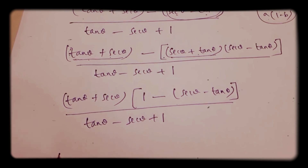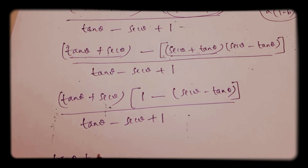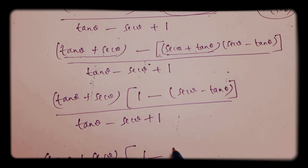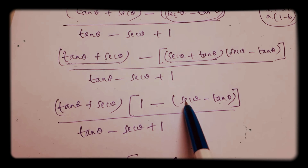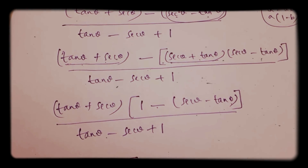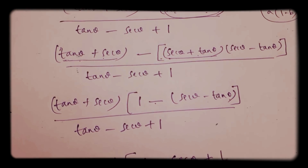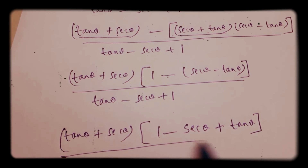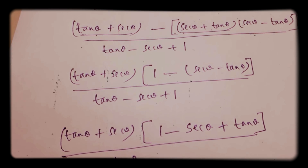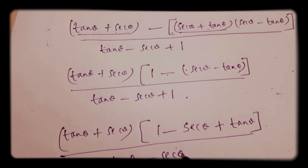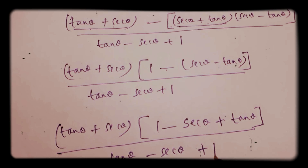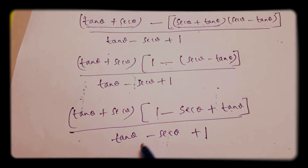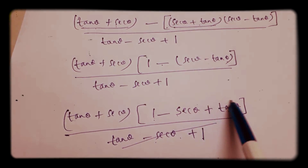Next, simplifying: (tan θ + sec θ)(1 - sec θ + tan θ) in the numerator, and (tan θ - sec θ + 1) in the denominator. Since (1 + tan θ - sec θ) equals (tan θ - sec θ + 1), these cancel out.